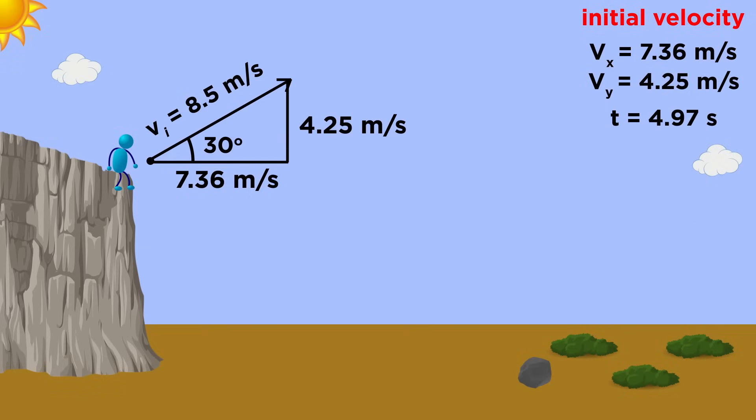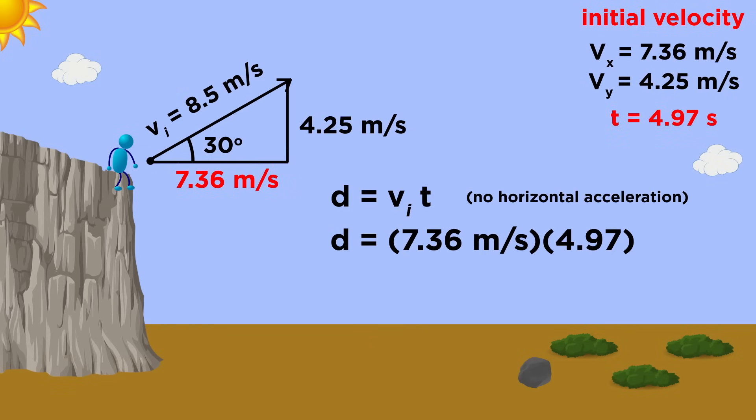This also makes it easy to calculate how far the rock will travel, because we know the horizontal velocity will be 7.36 meters per second, times the 4.97 seconds that it is in the air, which leaves us about 36.6 meters away from the edge of the cliff.